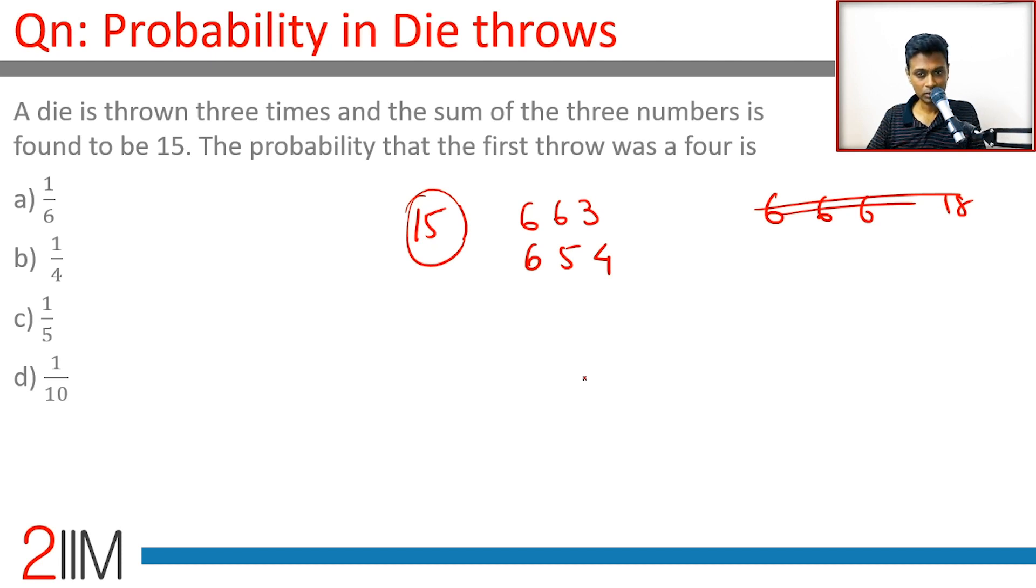If you don't have a 6 at all, then 5, 5, 5 is the only possibility. Right, brilliant.